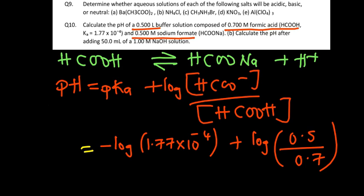You can now use the calculator and see what we're going to have. So negative log of 1.77 times 10 to the power negative 4, plus log of 0.5 divided by 0.7. I'm getting a value of 3.605 which would be rounded off to 3.6. That's our pH from our calculations there.